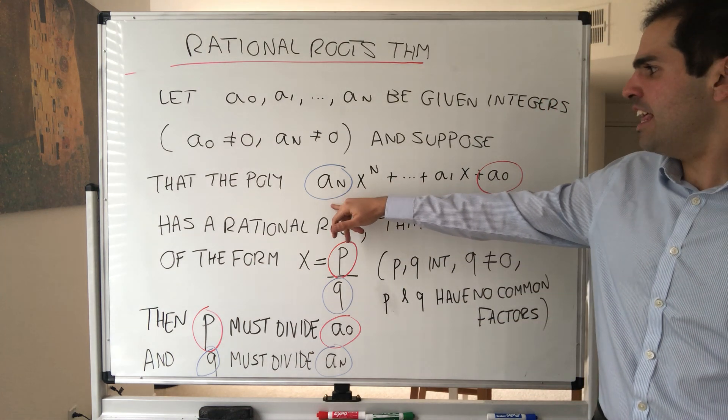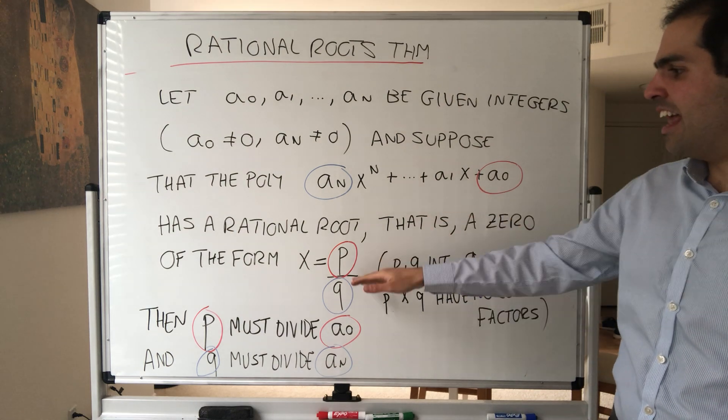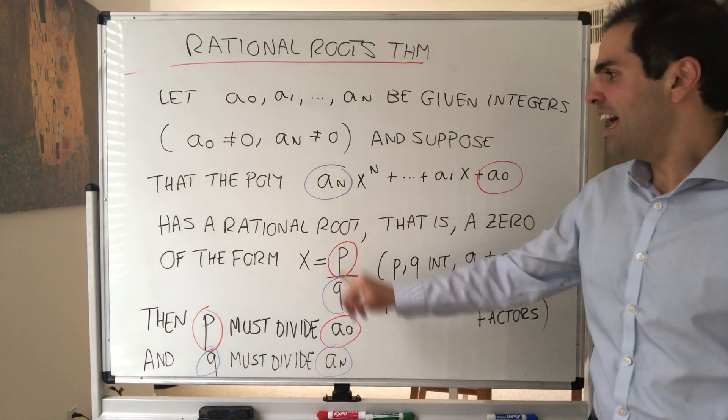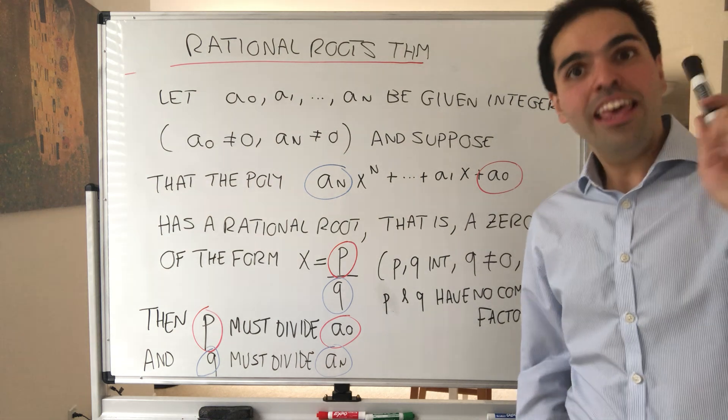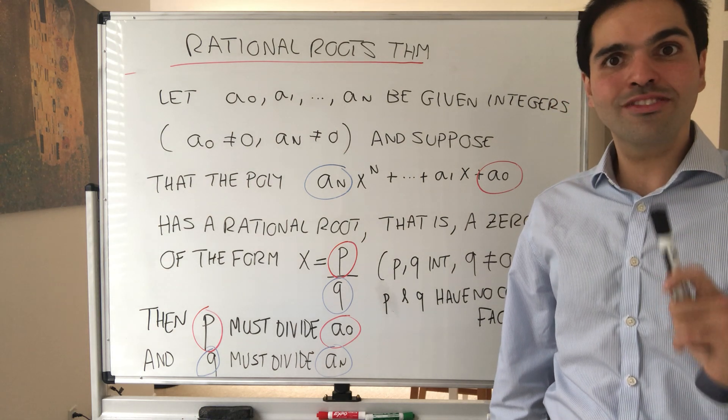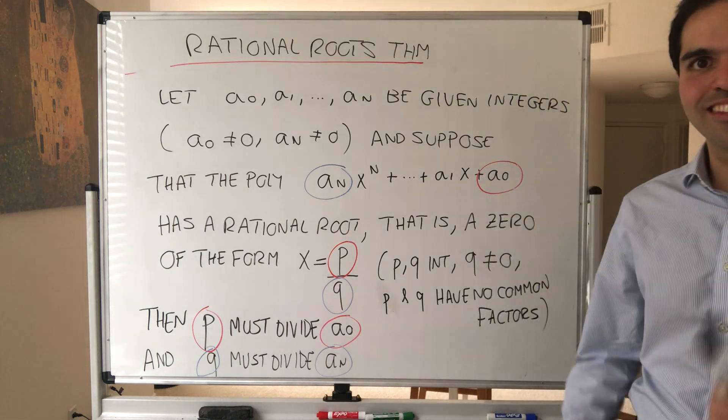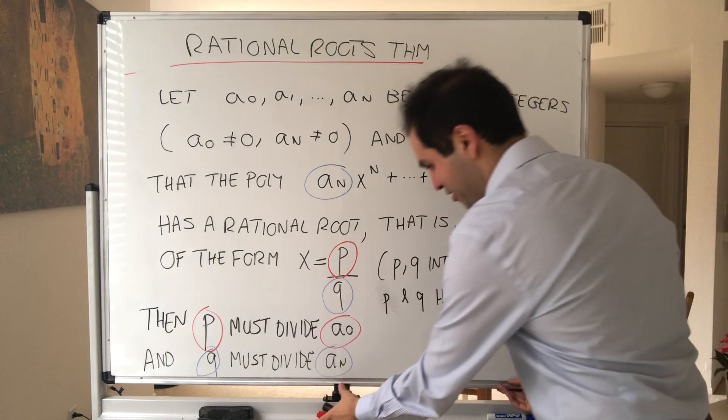Namely, it tells that if this polynomial has a rational root, then the numerator has to divide the constant term and the denominator has to divide the leading term. Now if you're my student, I know you're very tempted to skip proofs, but especially in this class you shouldn't because this is analysis. Proofs are the main character of the class, not just supporting roles.